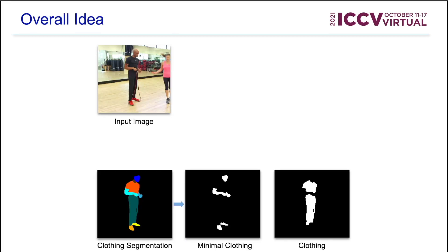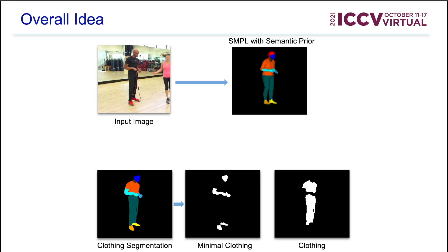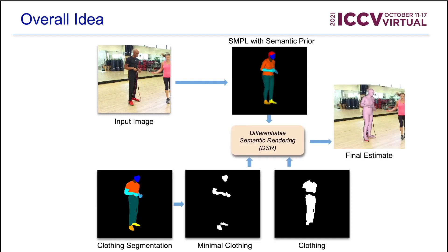Given an image, we use semantic clothing segmentation to obtain minimal clothing and clothing regions. However, to supervise SMPL with this information, we need to reason about which parts of the SMPL body model correspond to which clothing label. Hence, we introduce a SMPL semantic prior that represents a distribution over possible clothing labels for each vertex on the body mesh. Given observed clothing semantics and the SMPL semantic prior, we use a novel differentiable semantic rendering loss during training.